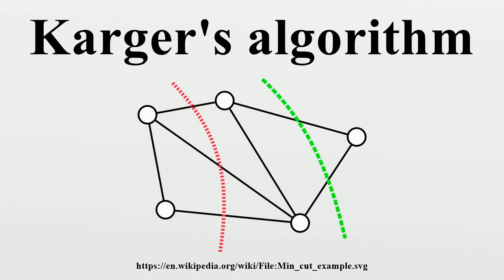In computer science and graph theory, Karger's algorithm is a randomized algorithm to compute a minimum cut of a connected graph. It was invented by David Karger and first published in 1993.